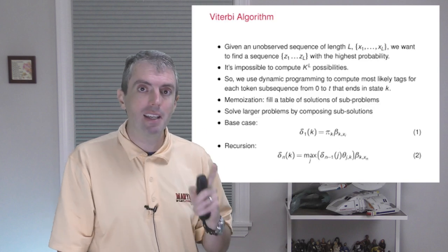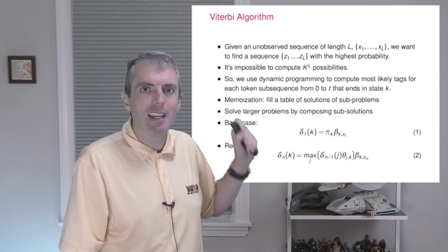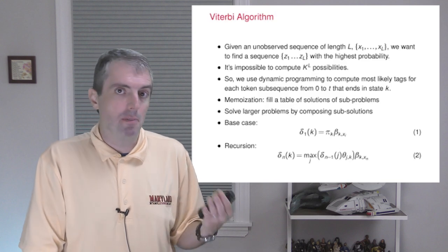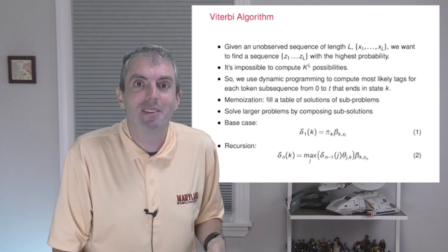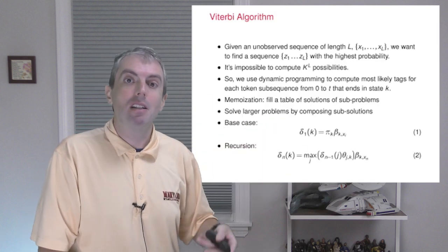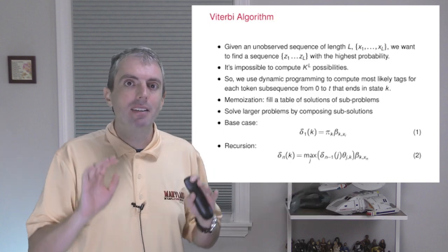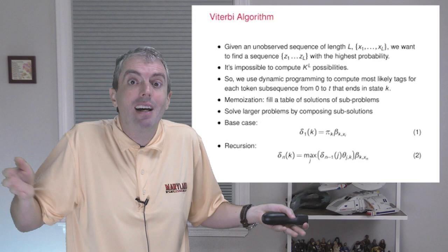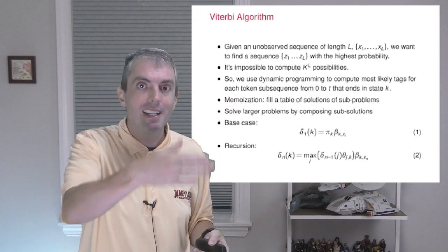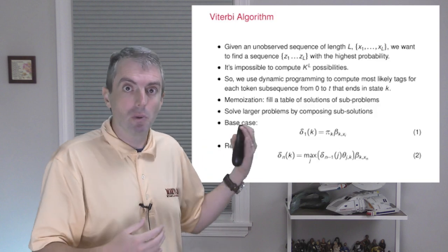For part-of-speech tagging, the base case is what is the best probability that we can get given that we have a sequence that ends in part-of-speech k at time one. So we've observed one word, the first word. What is the highest probability sequence of part-of-speech tags that could get us to that point with the part-of-speech tag k? The answer is simple. We don't have any choice in the matter for this one. We're in state k whether we like it or not. So we just compute the probability of being there. To compute the probability of being in state k at time one, we multiply the initial probability of that state by the probability of observing the first word in that state.